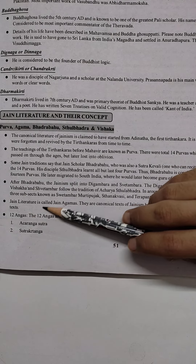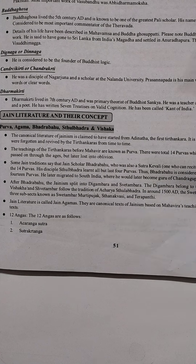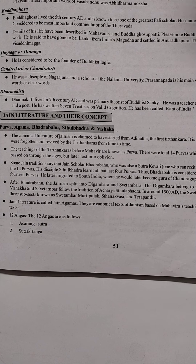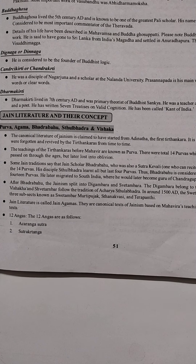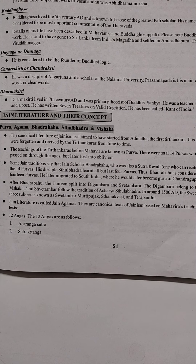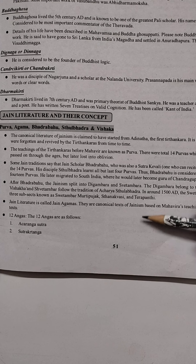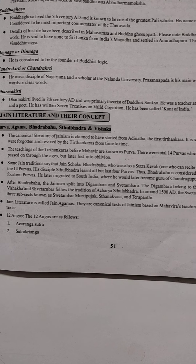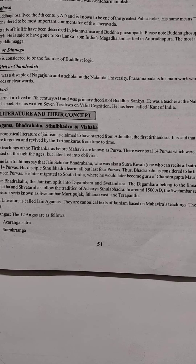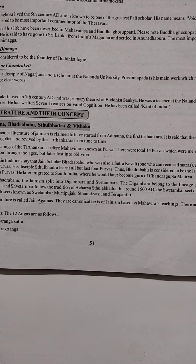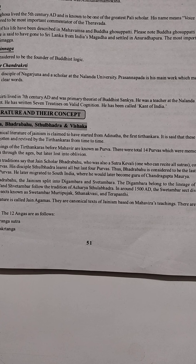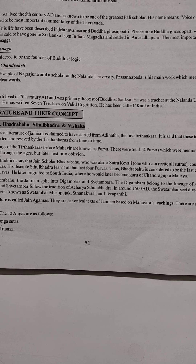Jain literature is called Jain Agams. They are the canonical texts of Jainism based on Mahavira's teachings. There are in all 46 texts.